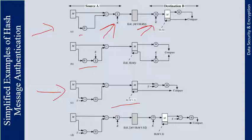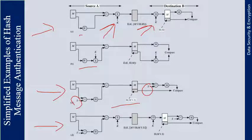This technique assumes that the two communicating parties share a common secret value S. Party A computes the hash value over the concatenation of the message and the secret value S, then appends the result as the hash value. Because B also knows S, it can recompute the hash value to verify. Because the secret value itself is not sent, an opponent cannot modify an intercepted message or generate false messages.